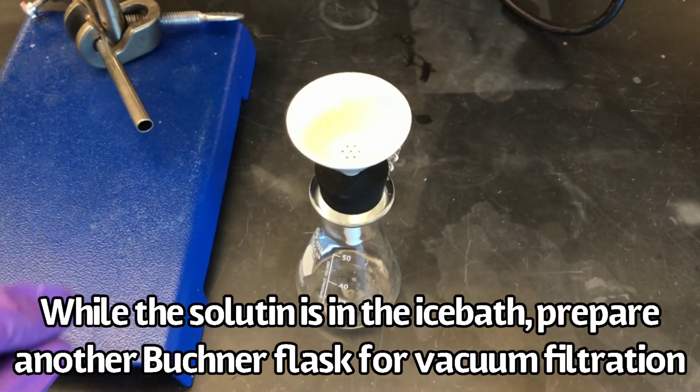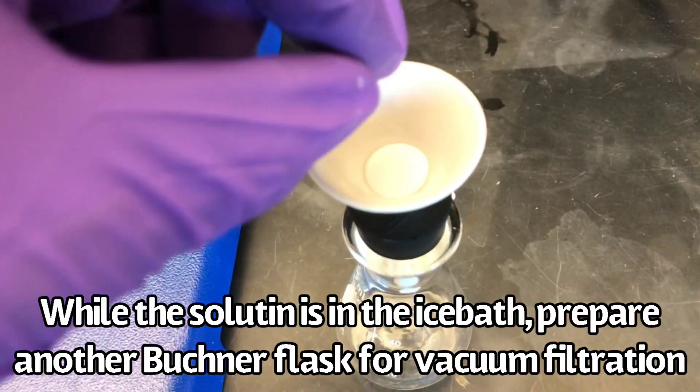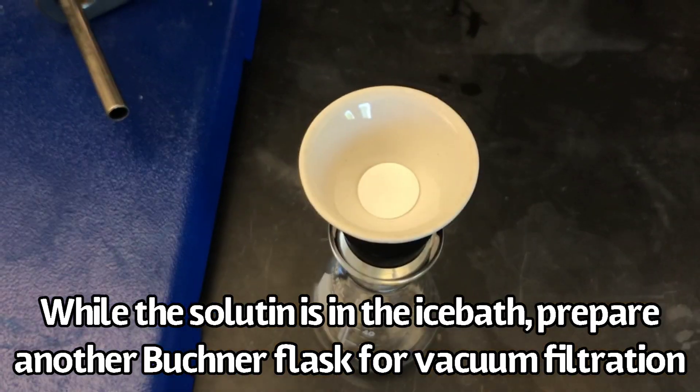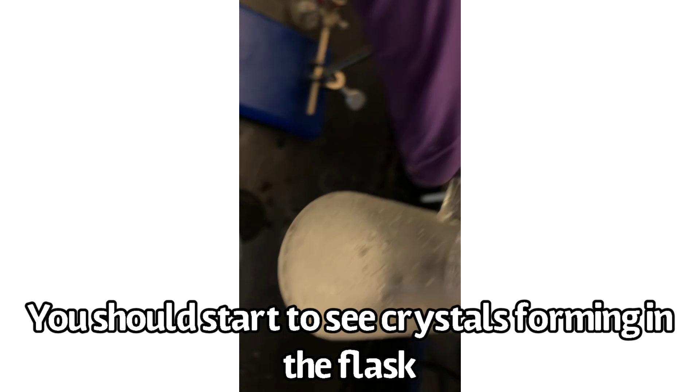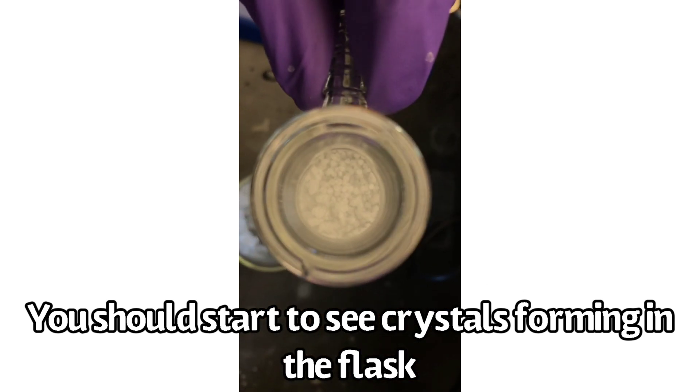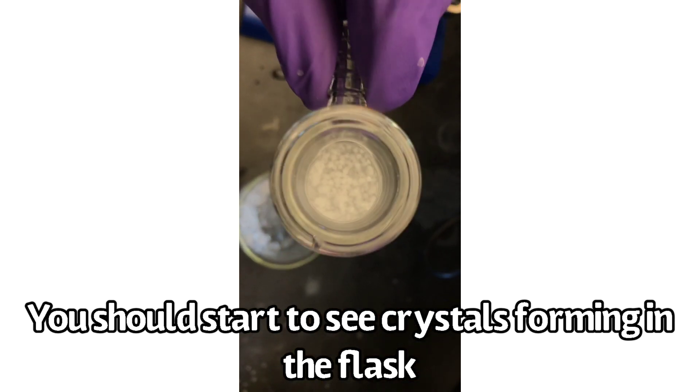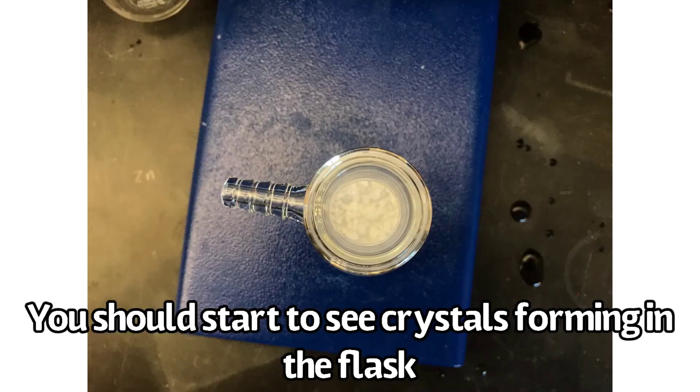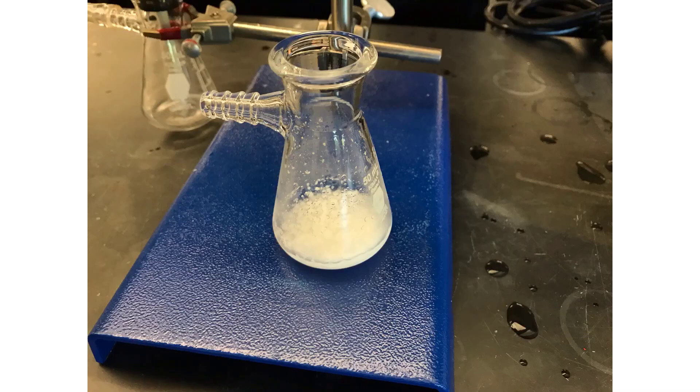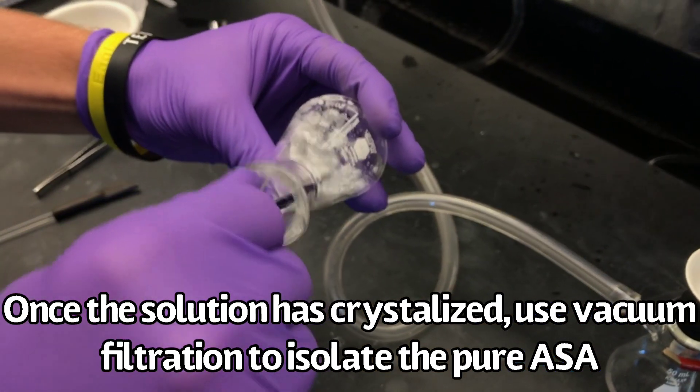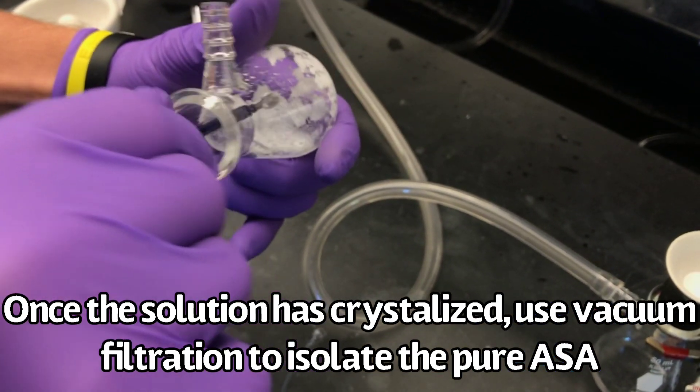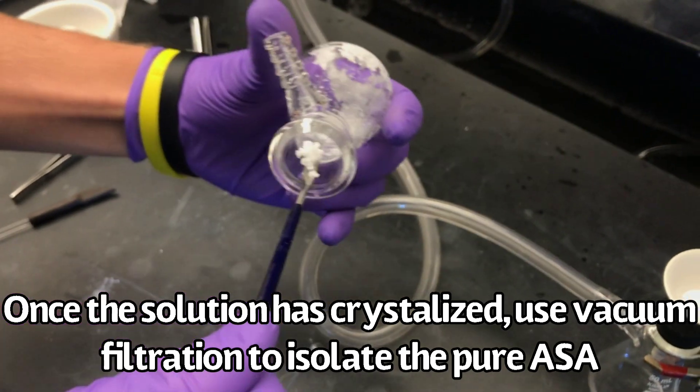Prepare another Bushner flask for vacuum filtration. You should start to see crystals form in the flask. Once the solution has fully crystallized, use vacuum filtration to isolate the pure acetylsalicylic acid.